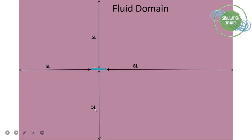As a general rule — based on my personal experience rather than a universal standard — you can use five lengths upstream of the body and eight to ten lengths downstream. Up and down about five lengths should be enough and normally won't cause problems. This applies for cases not taking free surface effects into account.